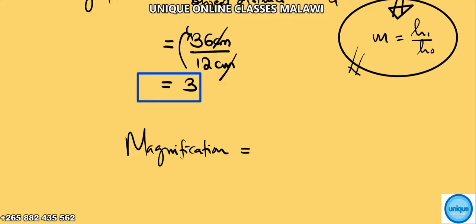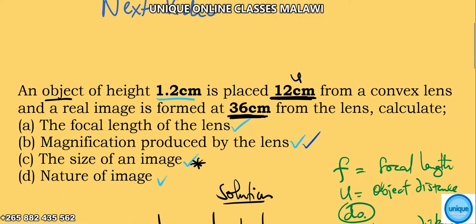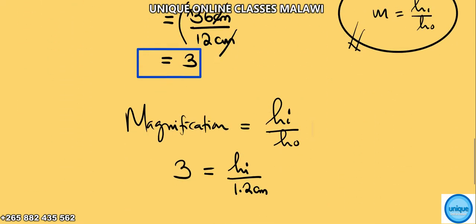Magnification is equal to height of the image divided by height of the object. So magnification is 3, so we're putting here 3 equals image size h_i divided by the object height, which is 1.2 centimeters.